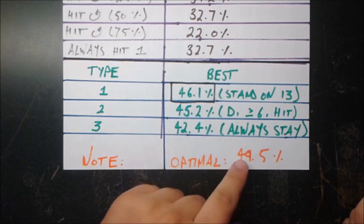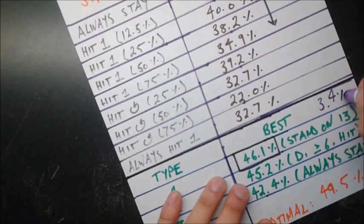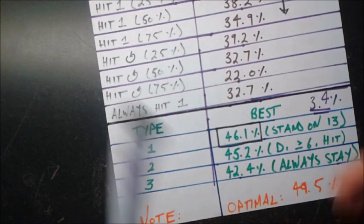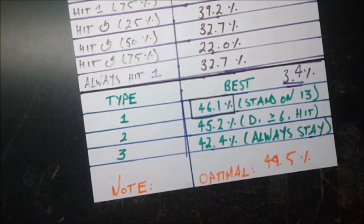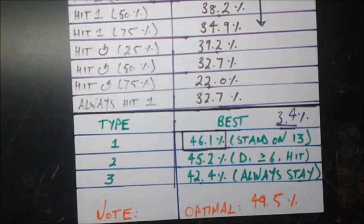So how far is this 46.1 from this 49.5? So it's 3.4 percentage points off. So it's not too far off, but of course, it is off. This basic strategy is something, if you're really serious, you should learn this. But if you're just playing with your friends, you know, maybe stand on 13s.